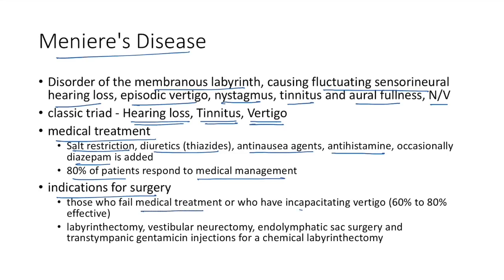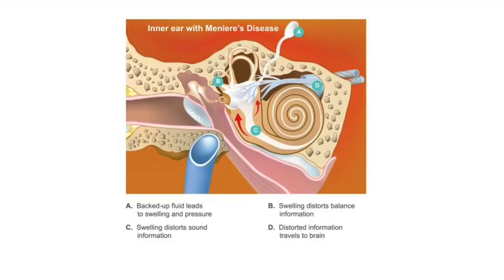Those who fail medical treatment or have incapacitating vertigo can undergo surgical treatment, which is 60–80% effective. Surgical options include labyrinthectomy, vestibular neurectomy, endolymphatic sac surgery, and transtympanic gentamicin injections for chemical labyrinthectomy. The pathogenesis involves backed-up fluid causing swelling and pressure that distorts balance information (causing vertigo) and sound information (causing hearing loss and tinnitus).